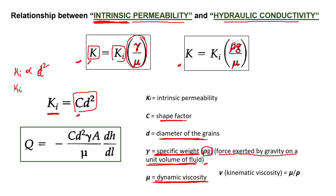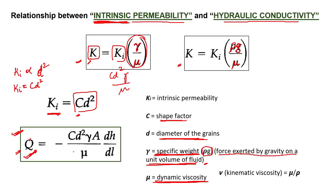Permeability depends upon the diameter of the grains, which decides the porosity, and the shape, which decides the permeability. So you can write the specific discharge formula by substituting Ki equals C times D squared and then gamma over mu in place of K. This formula is also really important — remember it.